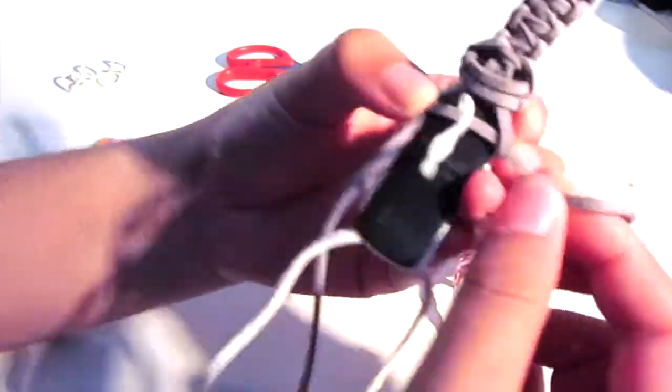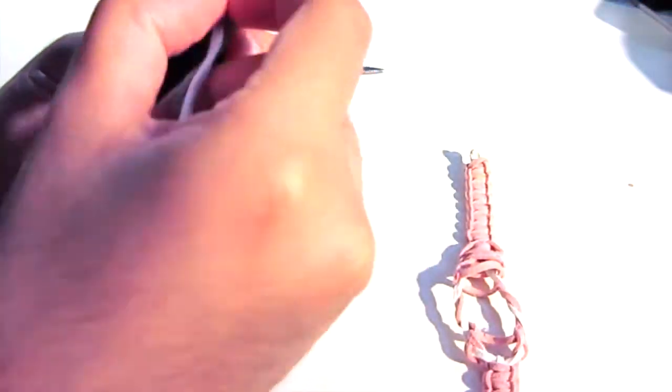And then we're going to thread a rainbow loom elastic band through that in the back, just so that you have something in the back to hold it as well that's a little bit stretchy.